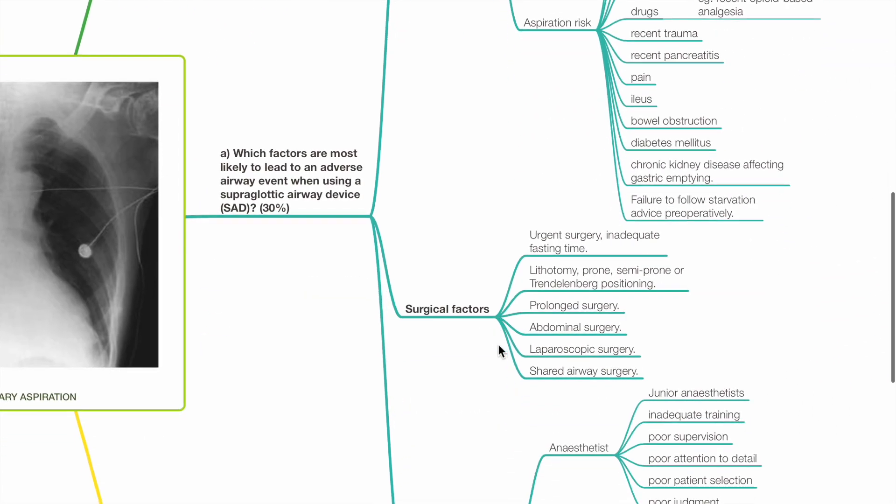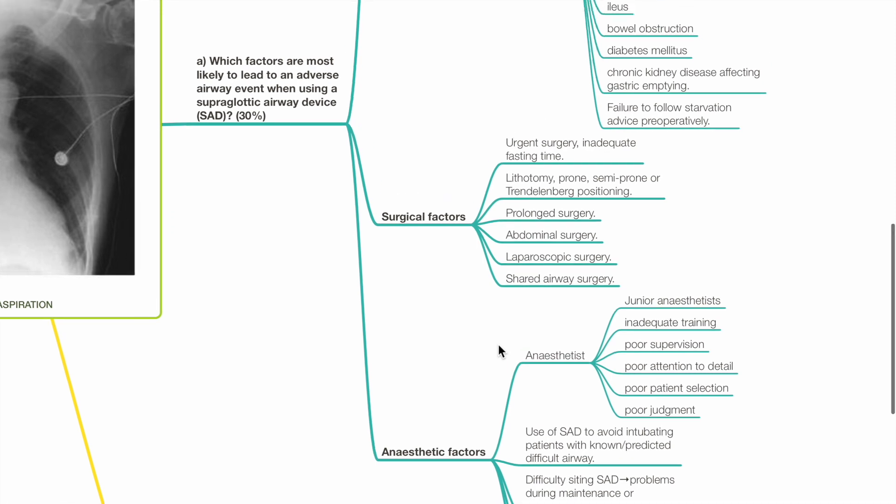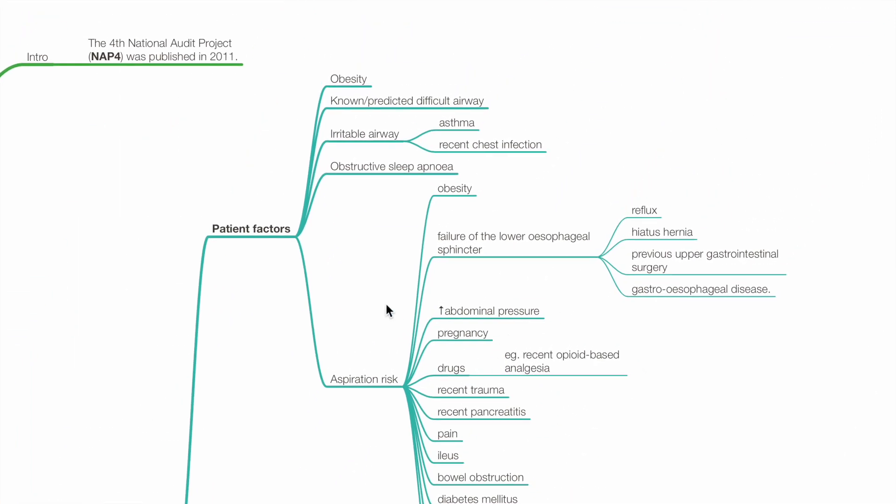These include patient factors, surgical factors and anesthetic factors. Patient factors include obesity, known or predicted difficult airway, irritable airway such as asthma or recent chest infection.